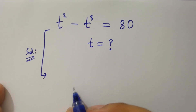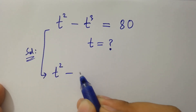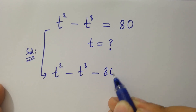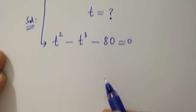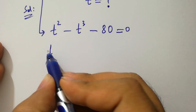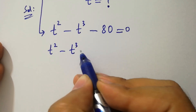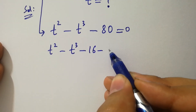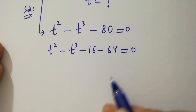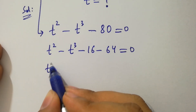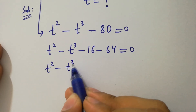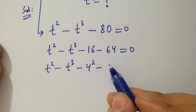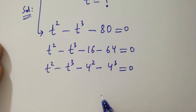This can be written as t squared minus t cubed minus 80 equals 0. So, t squared minus t cubed minus 80 is the same as minus 16 minus 64 equals 0, where 16 is the same as 4 squared and 64 is the same as 4 cubed.